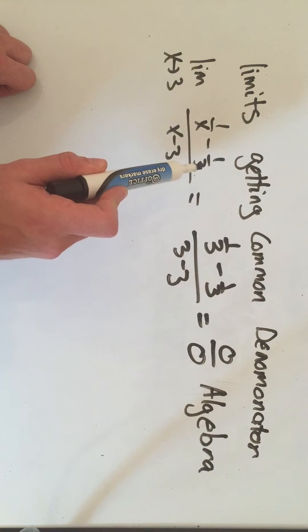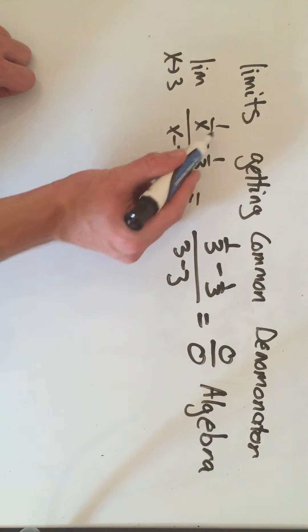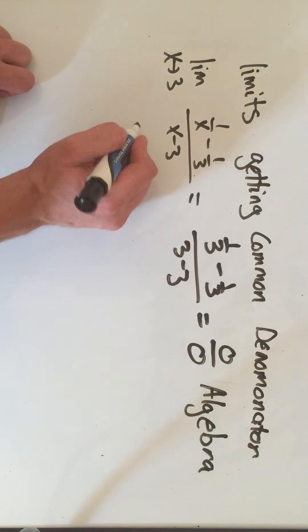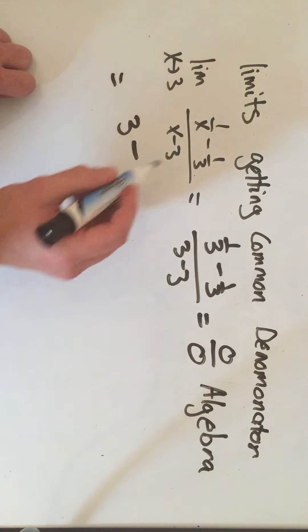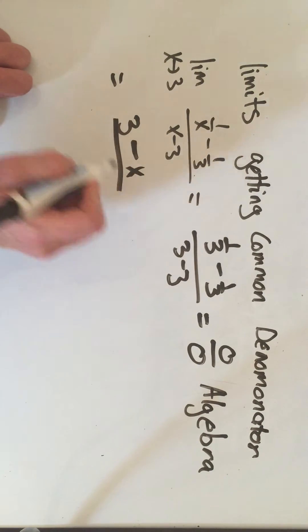I do 1 in the numerator times 3 in the denominator. I am cross-multiplying. So that'll be 3. I keep the minus sign in the middle. I cross-multiply x times 1 is x. And then I multiply the denominators together. So 3 times x is 3x. That's the fast way to get a common denominator.